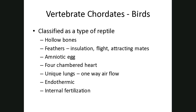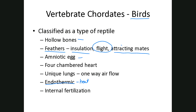Birds are considered part of the group of reptiles. What are some things specific to birds? Because birds need to be as light as possible for flight, their bones are actually hollow — that helps them not be heavy so they can achieve flight. Feathers are another characteristic that obviously help with flight, but they also provide insulation. Birds are endothermic, meaning they can use their metabolism to produce heat to stay warm, and feathers help with that through insulation. They also use feathers to attract mates. Birds also have the amniotic egg and a four-chambered heart.